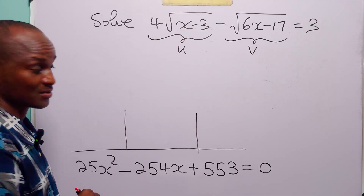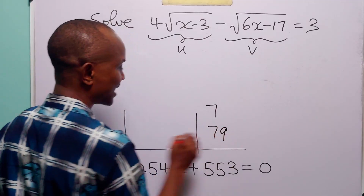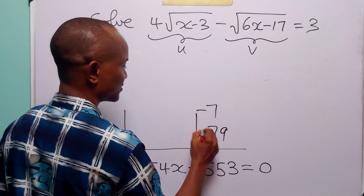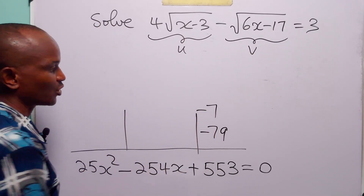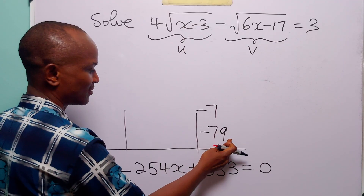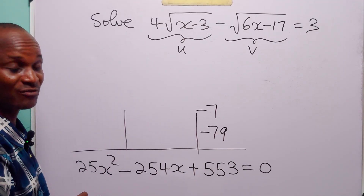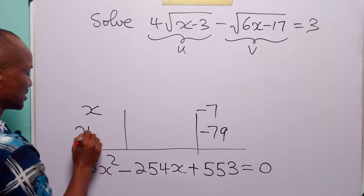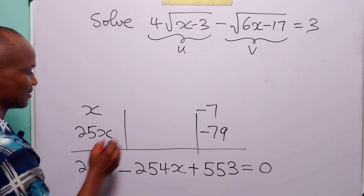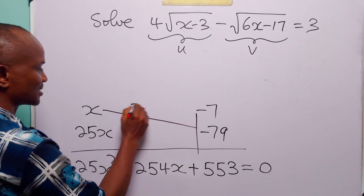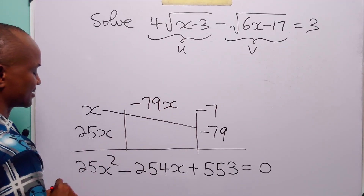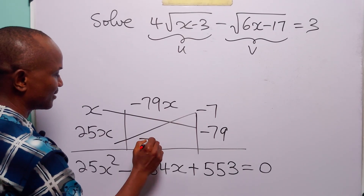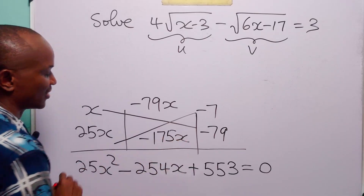553 has two prime factors: 7 and 79. Since we have a negative middle term, let the factors be -7 and -79 (their product is +553). The factors of 25x² are x and 25x. x × (-79) = -79x and 25x × (-7) = -175x, and -79x + (-175x) = -254x, which matches our middle term.